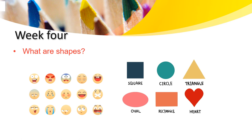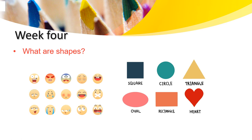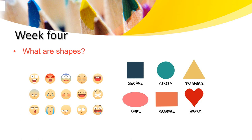Can we find them around us? What is the shape of your bed? What is the shape of the light bulb - is it a circle or a square? Looking around you - what is the shape of the carpet? Is it a rectangle or a square?